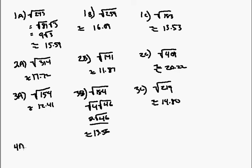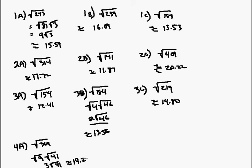4a: the square root of 369, which can be broken down into the square root of 9 times the square root of 41, which is going to be 3 square root of 41. That's down to its simplest form, and that's approximately 19.21.